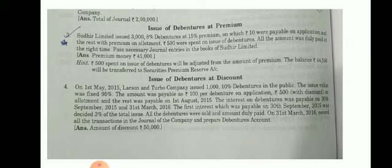This question is taken from the Sahit Bhavan publication. Sudhir Limited issues 3,000 debentures — 8% debentures at 15% premium — on which ₹10 was paid on application and the rest with premium on allotment. ₹500 was spent on the issue of debentures. All amounts were duly paid at the right time. Pass the necessary journal entries in the books of Sudhir Limited.